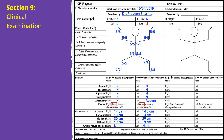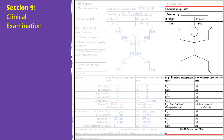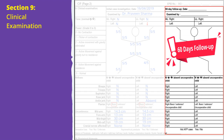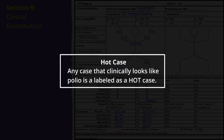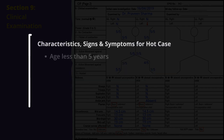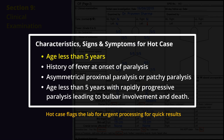Also assess whether any cranial nerves have been affected by the disease. The same clinical examination has to be done after 60 days of onset for inadequate AFP cases and cases with poliovirus isolation in stool. Further in Section 9, encircle loss of sensation, symmetry of paralysis, site of paralysis, and whether the case is a hot case or not. Any case that clinically looks like polio is a hot case — that is, age below 5 years, fever at paralysis onset, asymmetrical proximal patchy paralysis, or bulbar paralysis.